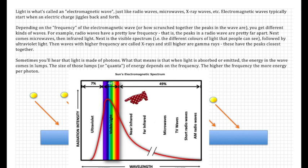The next is the visible spectrum, the different colors that people can see, followed by ultraviolet light, then the waves of higher frequency are called x-rays and still higher, gamma rays. The peaks in these are the closest together.